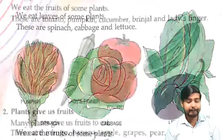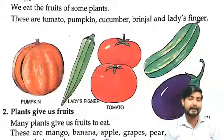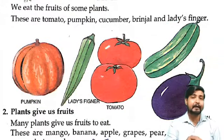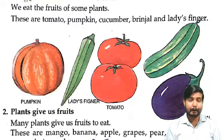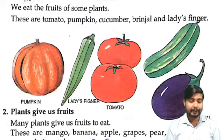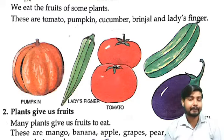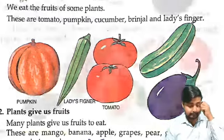Then we eat the fruits of some plants. Aur kai plants aise hai jinka hum fruits khaate hai. Those are tomato, pumpkin, cucumber, brinjal, lady finger. Yeh sab kya hai? Plants ka fruit hai jisko hum khaate hai.